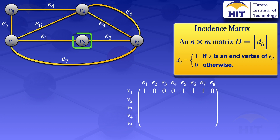Moving on to vertex v2, we see that v2 is an end vertex for edges e1 and e2. So we place ones at e1 and e2, and zeros on all other positions.